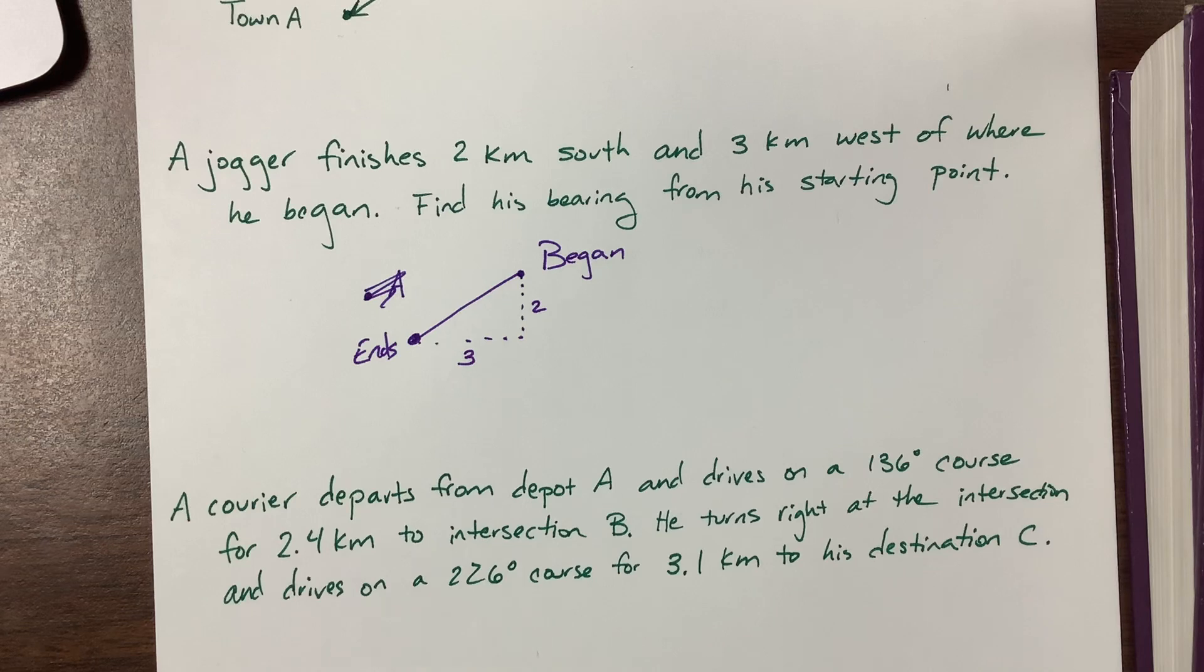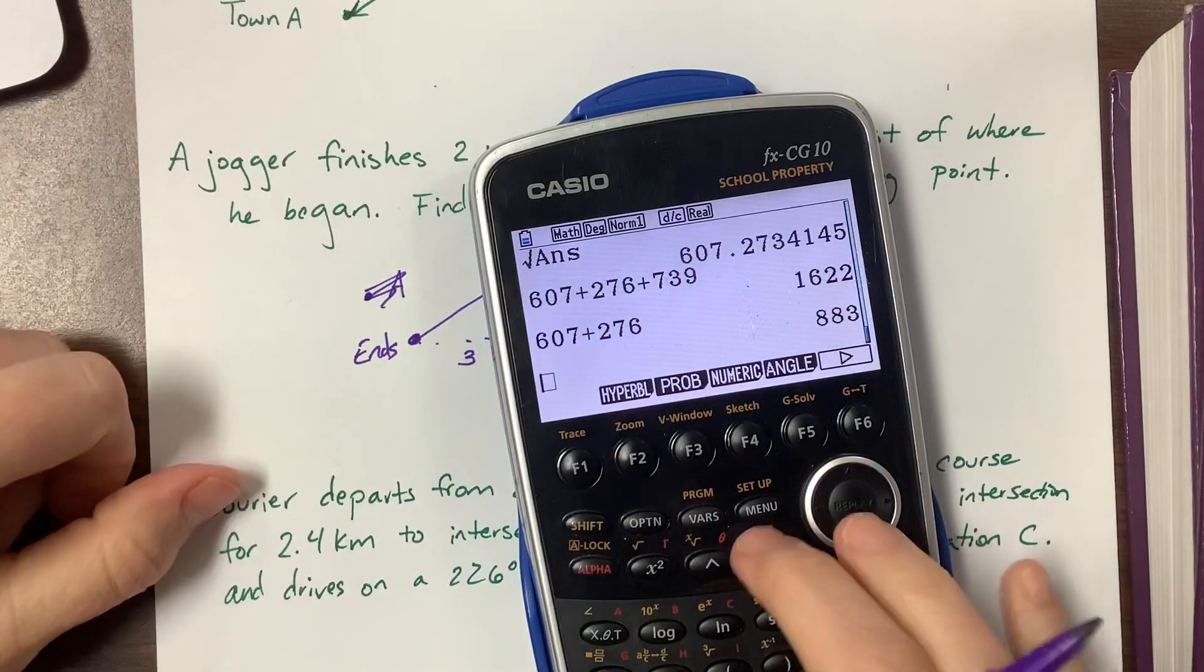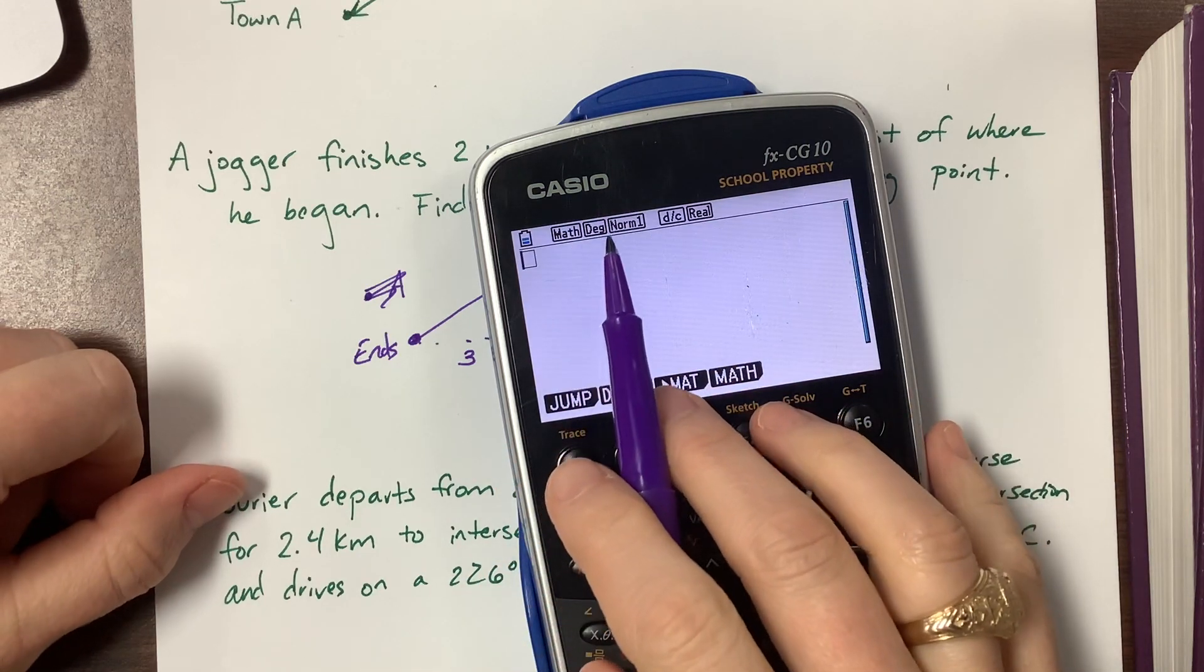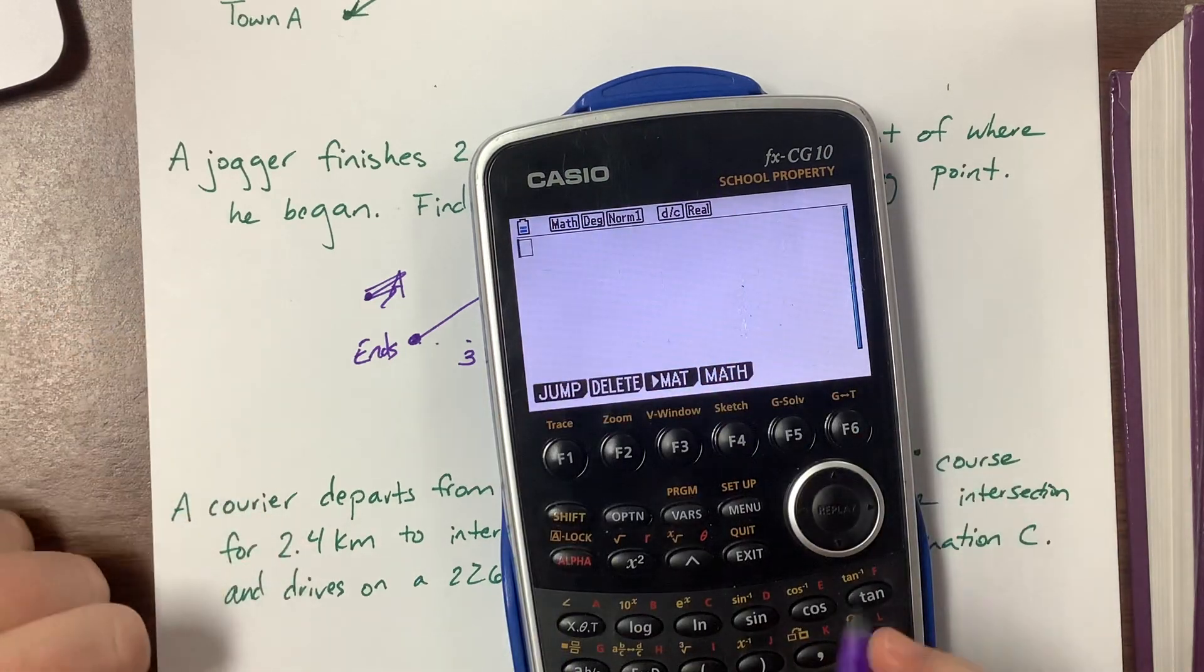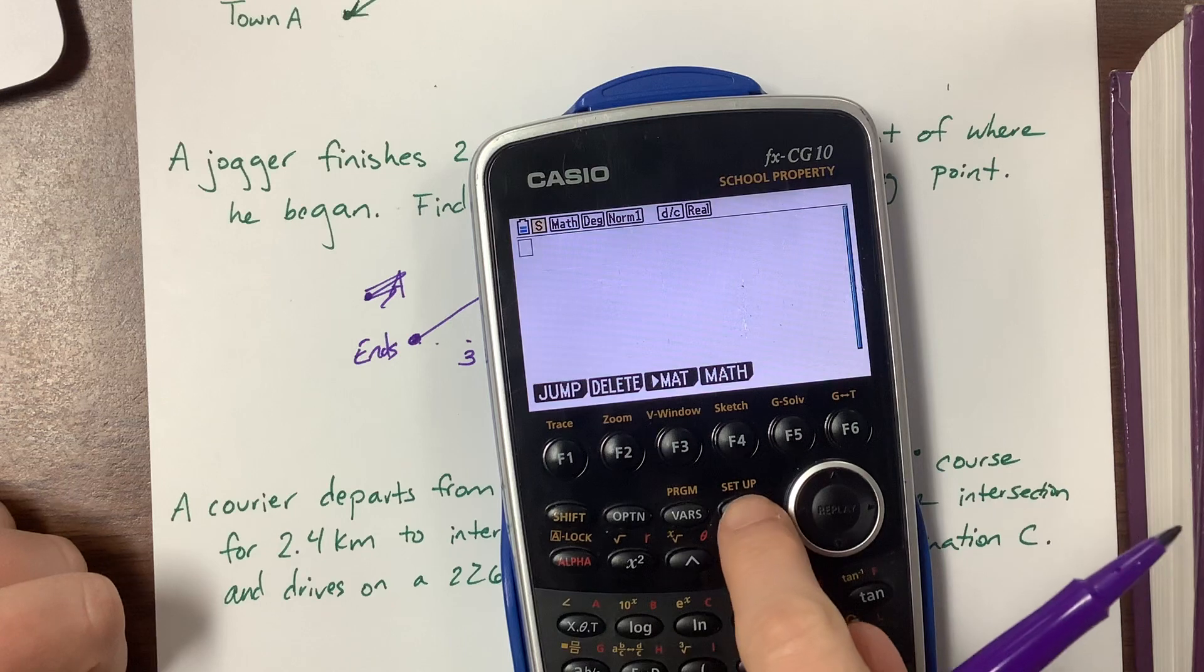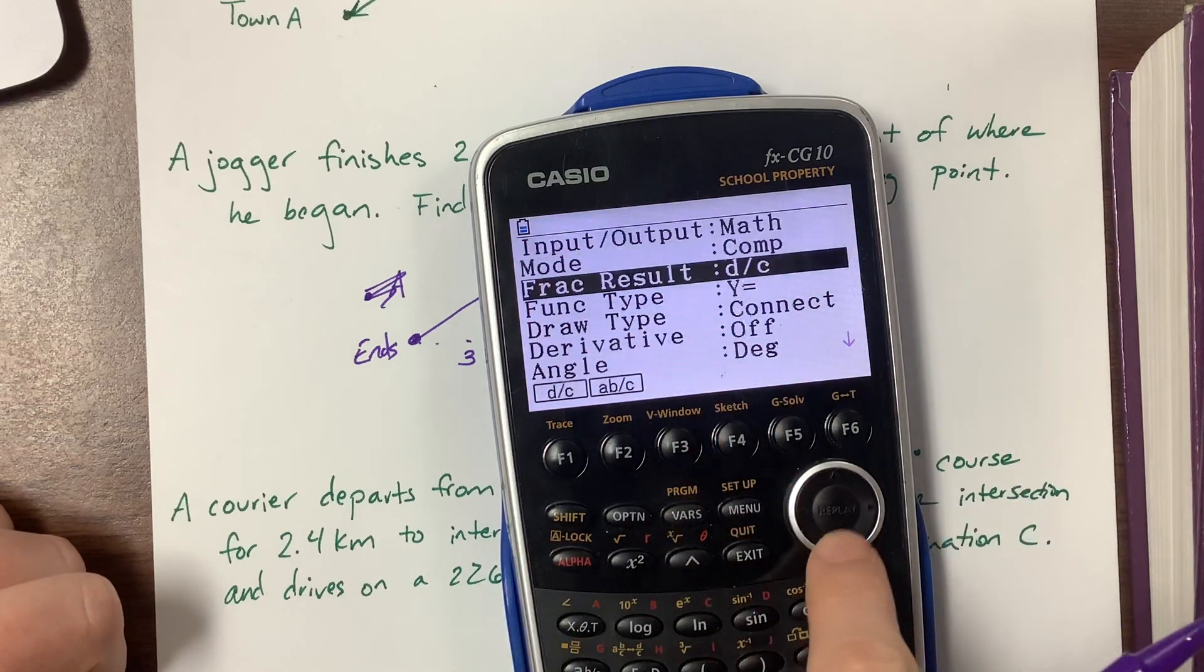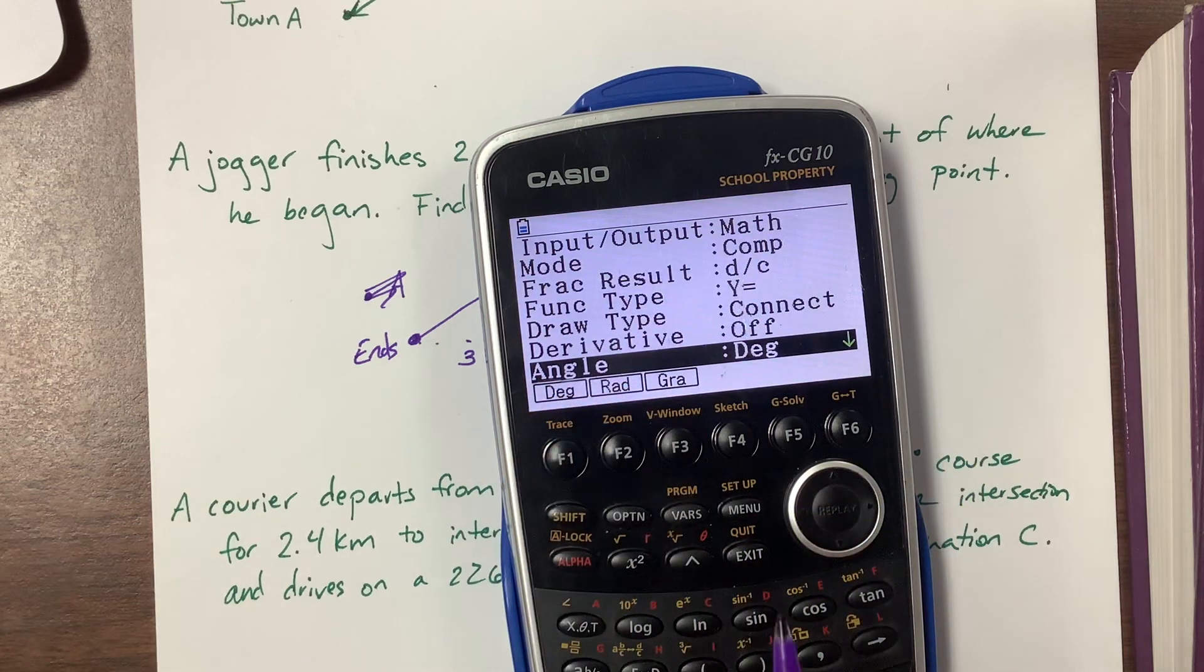As I get started here, we typically will do bearings in degrees. I want to verify that my calculator is in degrees. If I'm using the Casio and it's not in degrees - during the test I'm not going to remind you how to do this - but you go shift set up, so set up is shift menu, so I can come down here to angle. In IB and in pre-calc we go back and forth, so make sure you know how to do that.